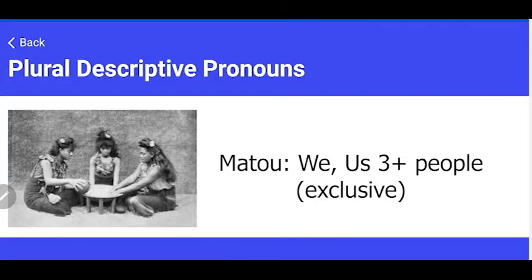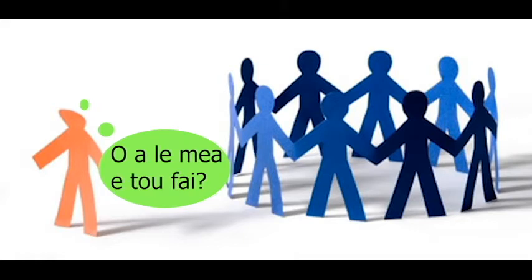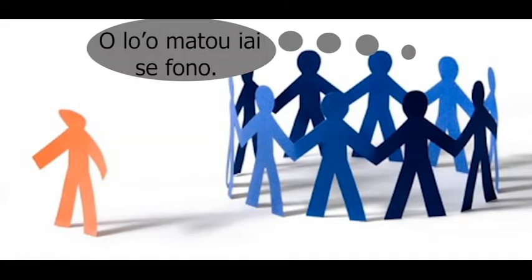It's the exclusive version of 'we' or 'us.' If there is a circle of people — as you see here — and the pinkish character asks 'what are you all doing?', the characters would say 'we are having a meeting.' The meeting is exclusive to the blue characters and excludes the pinkish one. The verb or main idea is 'ii,' meaning 'have,' so the descriptive pronoun 'motto' goes before it.